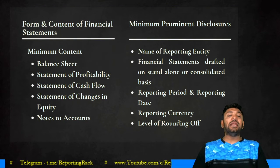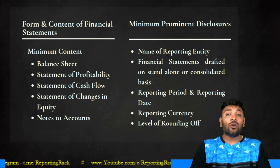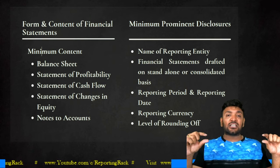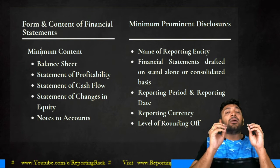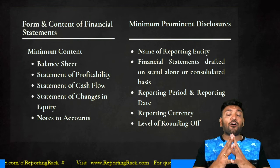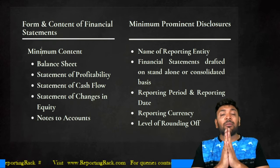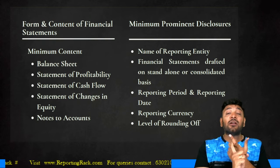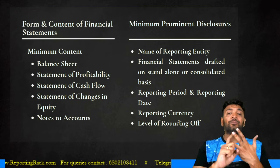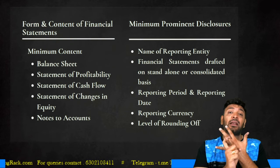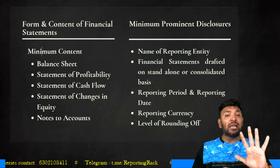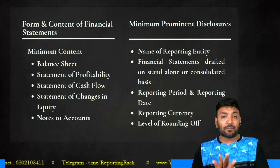What is the minimum content prescribed by Ind AS 1? Though its heading says 'Presentation of Financial Statements,' the more appropriate heading would be 'Minimum Contents in Presentation of Financial Statements.' Financial statements should at minimum include: a balance sheet, a statement of profitability (comprising P&L and OCI), a statement of cash flows dealt with under Ind AS 7, a statement of changes in equity — an additional statement compared to IGAP — and finally, notes to accounts.